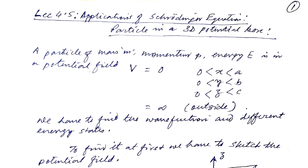The case is quite similar — we have a particle of mass m, momentum p, and energy E, in a potential field v equals to 0 when x belongs to 0 and a, y belongs to 0 and b, and z belongs to 0 and c. That means if we sketch it as before, we will get nothing but a cube.